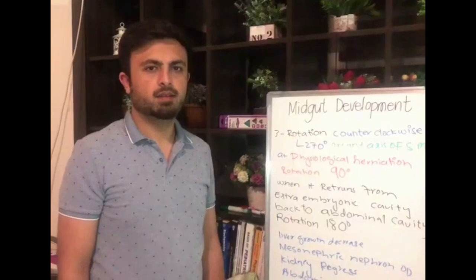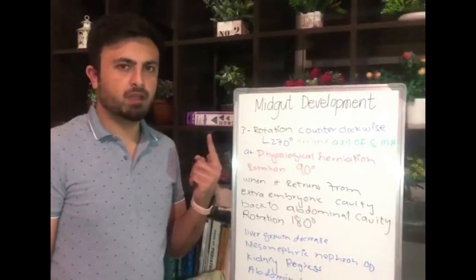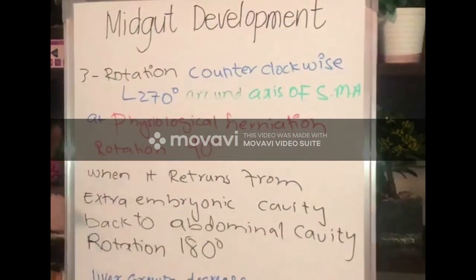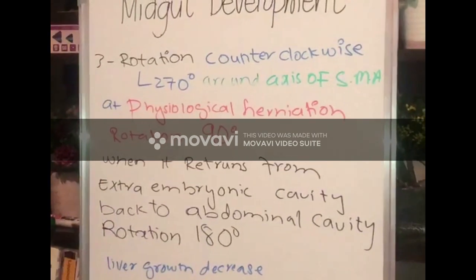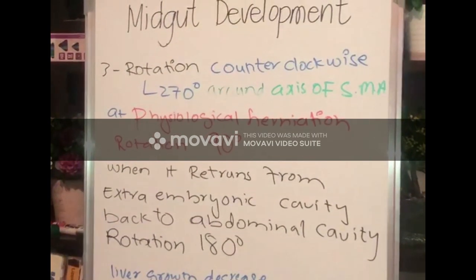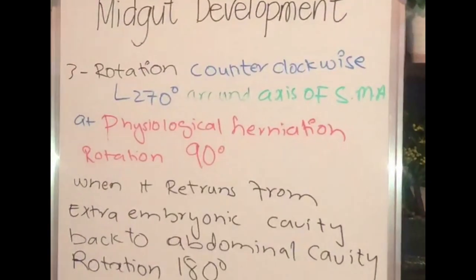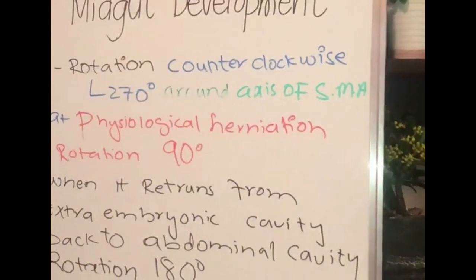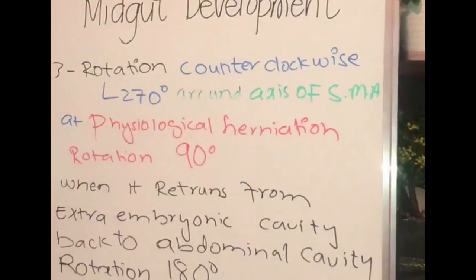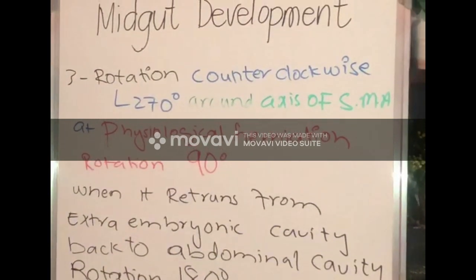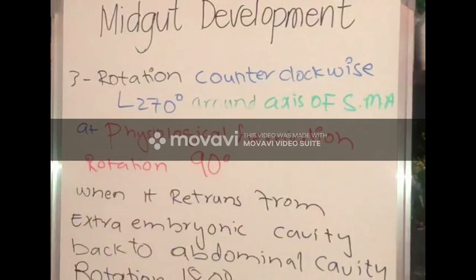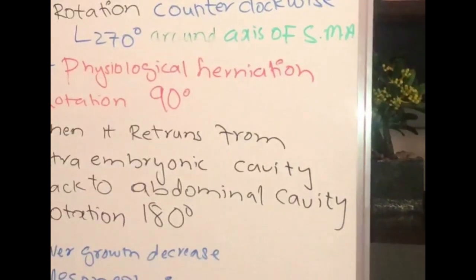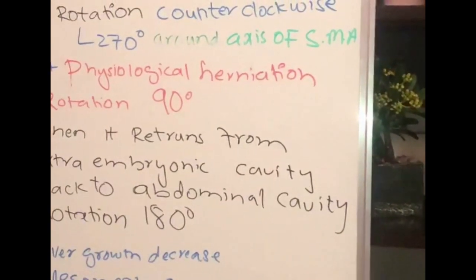We have covered the first step, which was the primary intestinal loop formation. The second step was physiological herniation. Our third step is rotation — in embryology, rotation is very important as it is responsible for the positioning of the midgut. The rotation is counterclockwise and the total rotation in the midgut is 270 degrees. Previously we discussed that the stomach rotates 90 degrees. The midgut rotation occurs counterclockwise around the axis of the superior mesenteric artery.